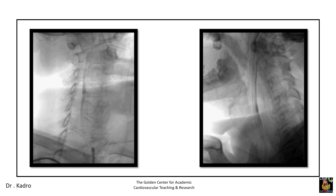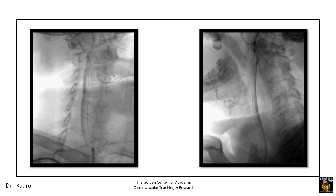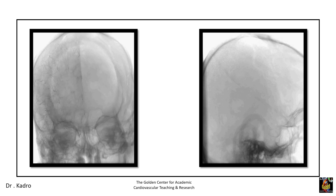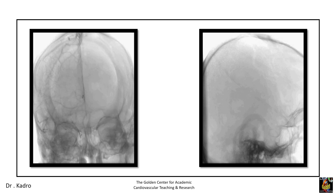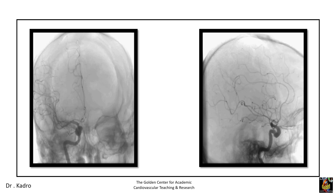There is a little pinching of the right external carotid. The intracranial angiogram shows good perfusion to the brain with no loss of any side branch — this is the AP view. The lateral view also confirms good perfusion.